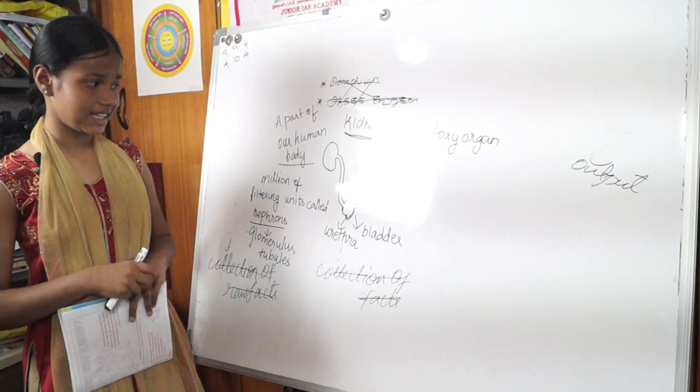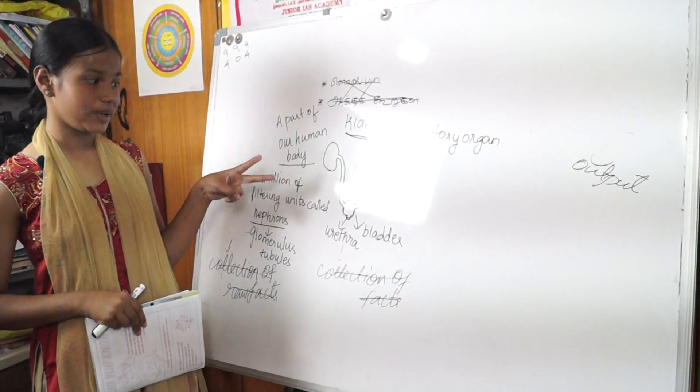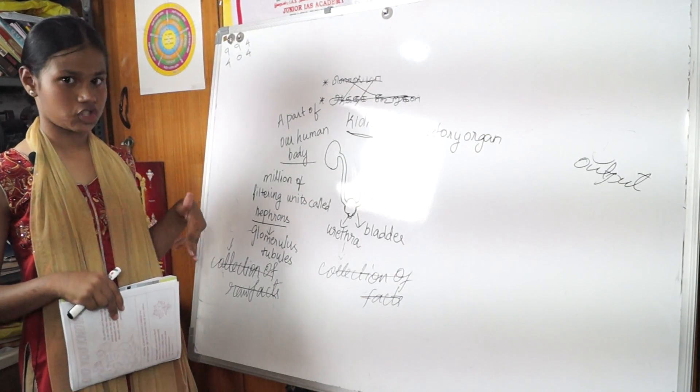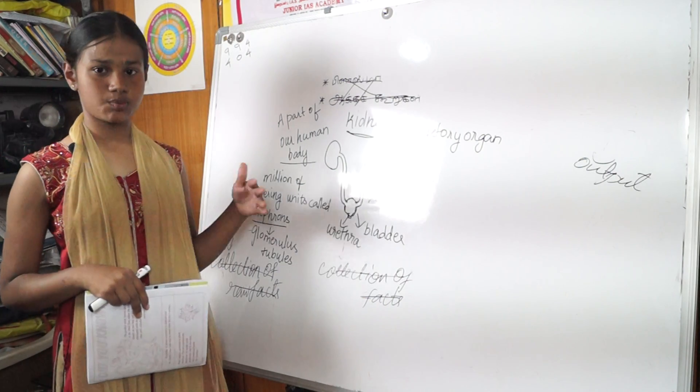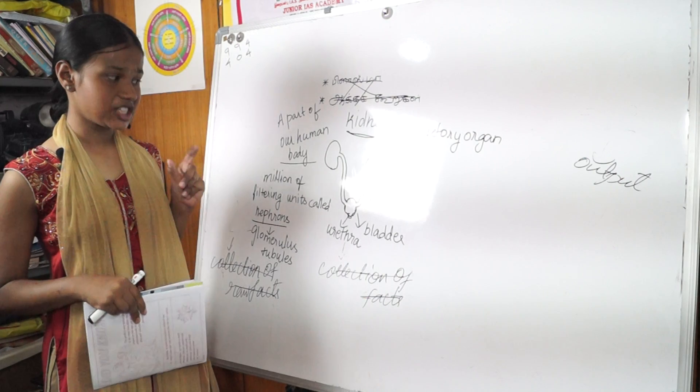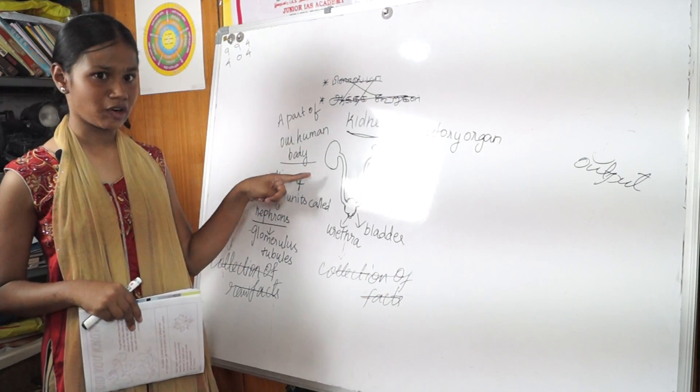The kidney is a two-bean-shaped organ that is located just below our ribcage. Each human body has a pair of kidneys.